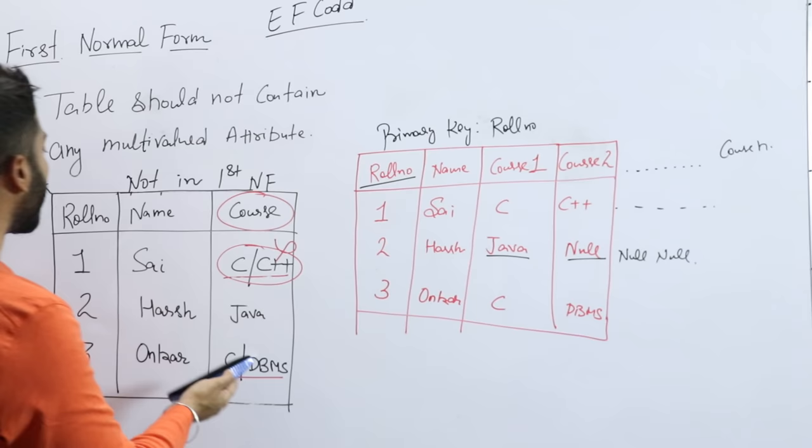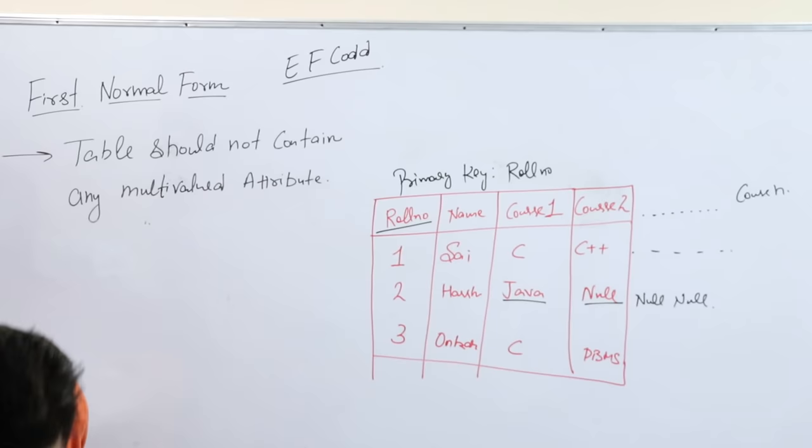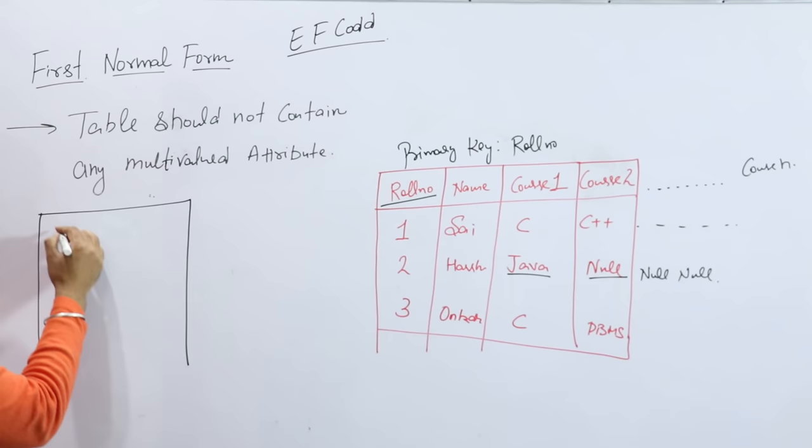This table we can divide into two tables. One is a base table. In the base table we can have roll number and name.